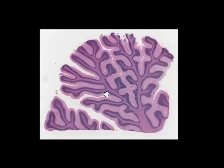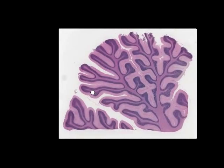Surrounding the white matter is darker staining granular material and then a homogenous pale staining area outside it — collectively these two are the grey matter of the cerebellum. The relative positions of grey matter and white matter in the cerebellum are reversed relative to the spinal cord. In the spinal cord the white matter is on the outside and grey matter on the inside, whereas in the cerebellum and in the cerebrum the grey matter is on the outside and the white matter is on the inside.